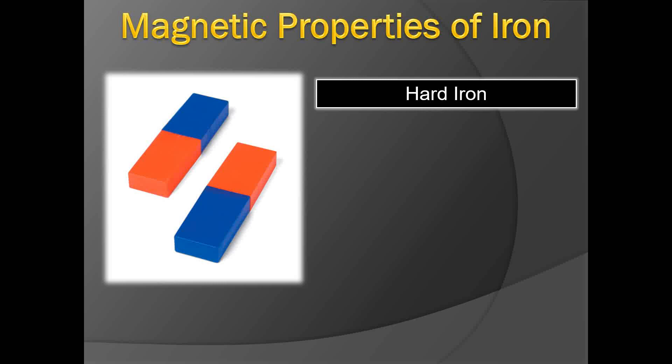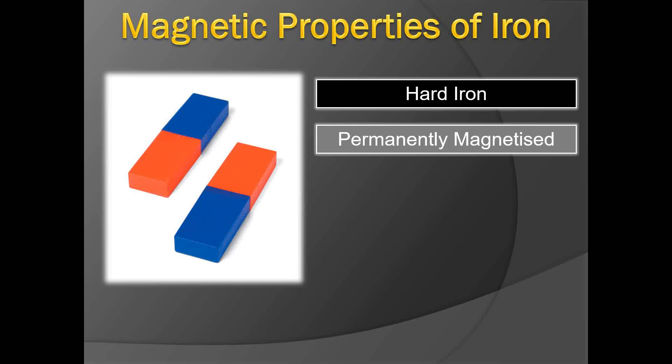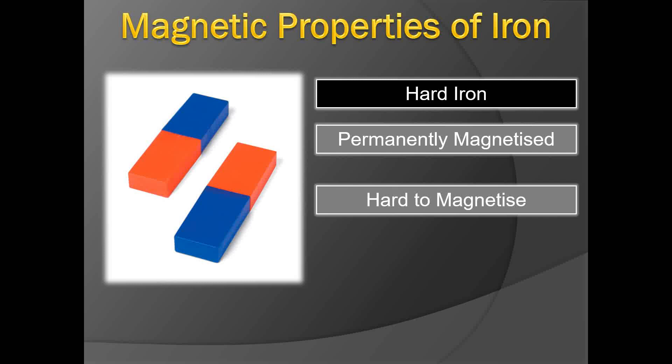A ship behaves like a magnet when it is constructed. A ship is made of hard iron and soft iron. Hard iron is permanently magnetized — once magnetized, it remains so. Although it is hard to magnetize in the first place, once it does get magnetized it stays that way, and therefore the magnetism of hard iron is called permanent magnetism, because it is difficult to unmagnetize it.